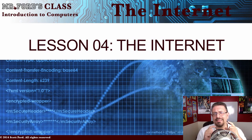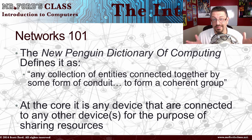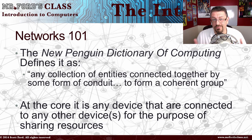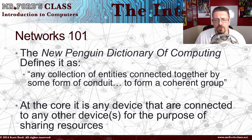We do have to talk a little bit about basic networks so we can understand what the internet is. We begin by taking a look at what is a network. The New Penguin Dictionary of Computing defines a network as any collection of entities connected together by some form of conduit to form a coherent group.